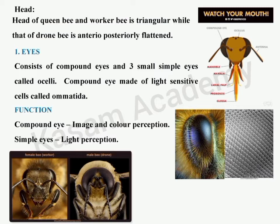The eyes are compound eyes, and three simple eyes are also present, called ocelli. The compound eyes are made of light-sensitive cells called ommatidia. The single eye picture and the side picture show the small cells called ommatidia. The three simple eyes are arranged between the two compound eyes in a triangular shape, as you can observe in the first picture.